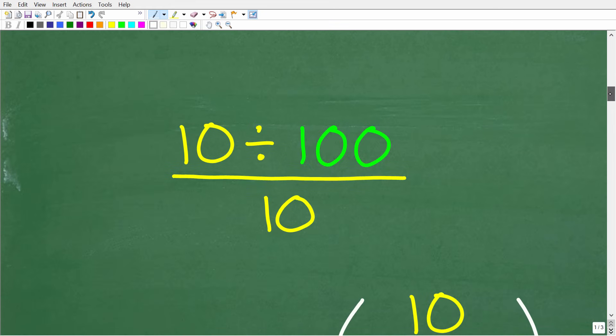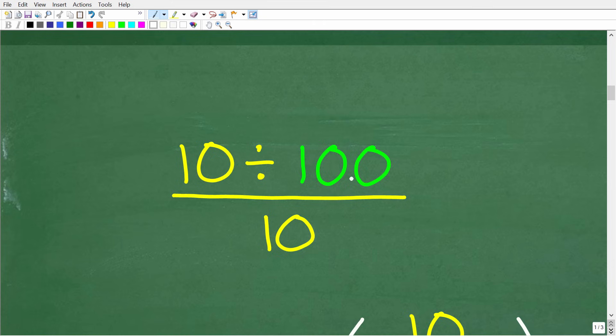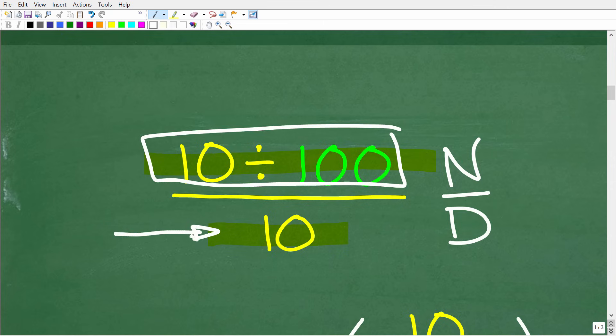All right, so now here is the problem. We have 10 divided by 100 over 10. Okay, so what do you think we're going to do now? Now, remember, I said we want to simplify the entire numerator before we take on the denominator. So here is our numerator, and here is our denominator. So we need to address this right here before we talk about this 10 down in the denominator.